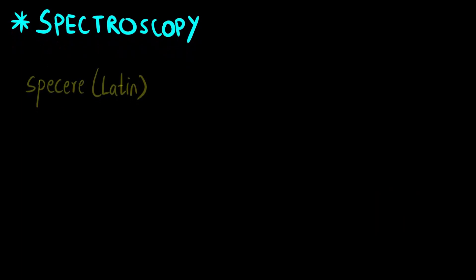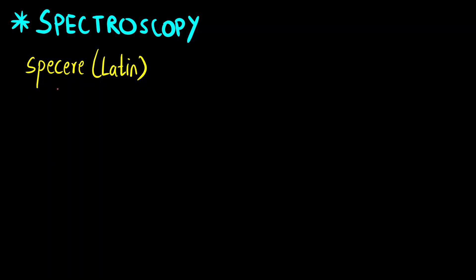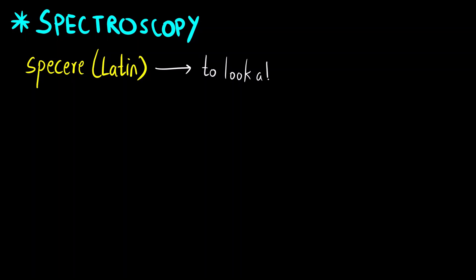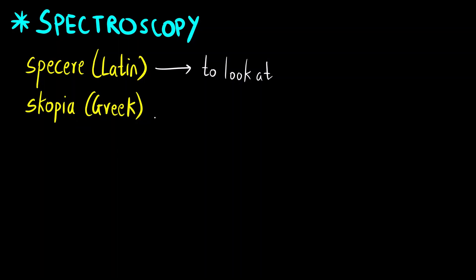Let us first understand what is the basic meaning of spectroscopy and spectrometry. Spectroscopy is derived from a Latin word 'specer' meaning 'to look at,' and also from the Greek word 'scopia' which means 'to see.' What we study in spectroscopy is we basically observe the molecular motions or the interaction of the molecule with radiative energy.